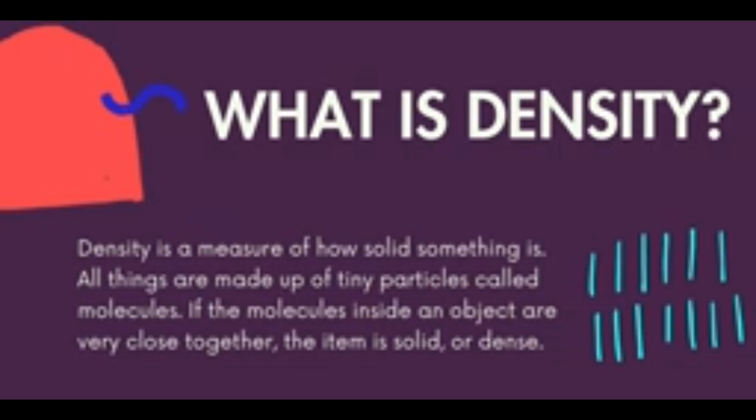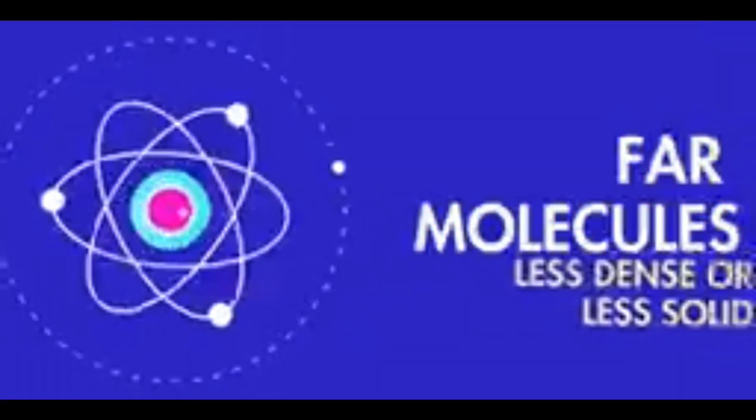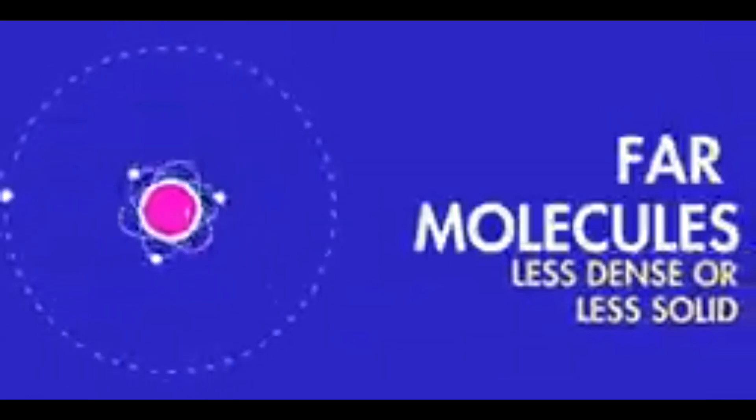All things are made up of tiny particles called molecules. If the molecules inside an object are very close together, the object is solid or dense. If the molecules are farther away from each other, the object is less dense or less solid.